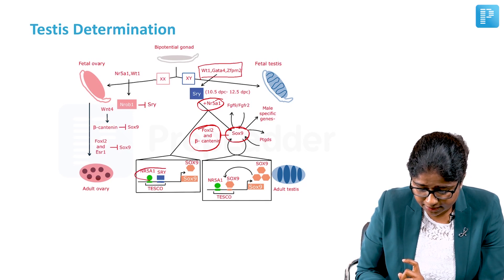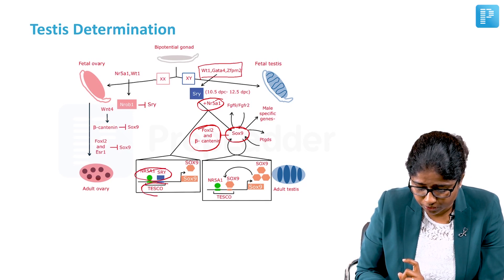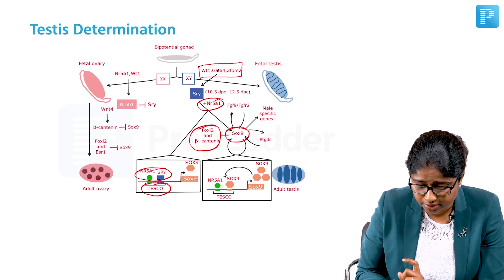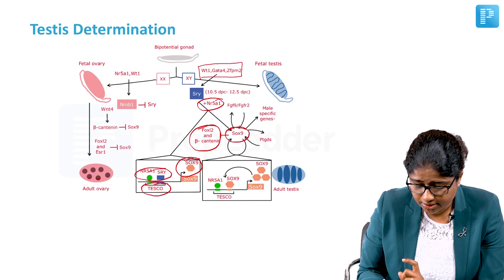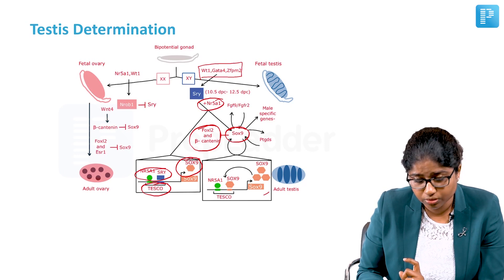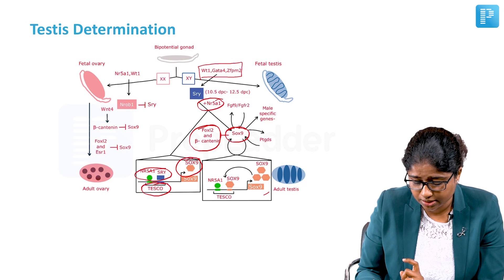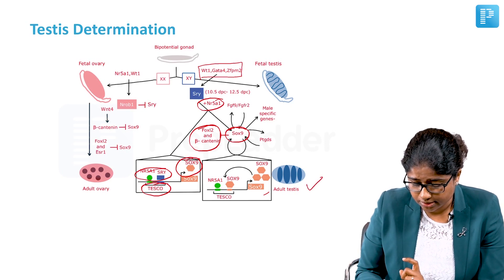NR5A and the SRY act as testicular promoting factors which increase the SOX9 expression. Once SOX9 is expressed, it acts as an auto-promoter and promotes its own further transcription. This results in the development of your adult testis.